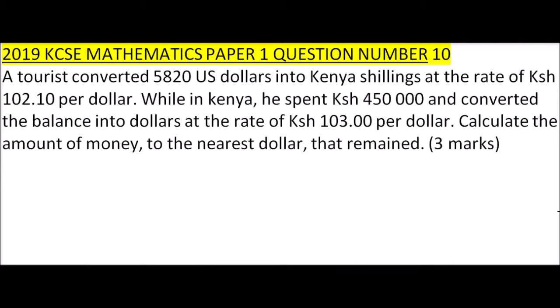This you learn in Commercial Arithmetic in Form 1. Just to remind ourselves, when you are converting currency — when you are changing to the local currency, since this is done in the bank or Forex Bureau — your dollar value is multiplied at the lower value compared to the value that you sell. The difference is a profit that the bank or Forex Bureau makes out of the exchange of money, because it is business.